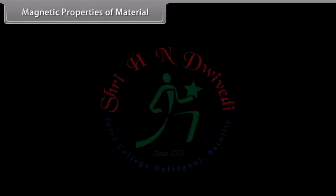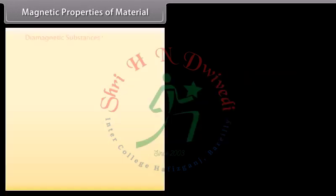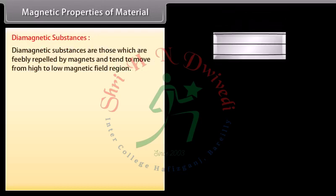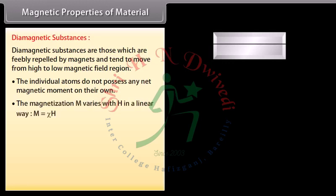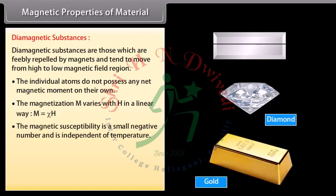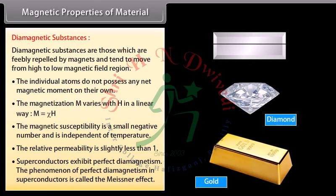Magnetic properties of materials: Materials are divided into three categories. Diamagnetic substances are feebly repelled by magnets and tend to move from high to low magnetic field regions. Their individual atoms do not possess any net magnetic moment. Magnetization M varies linearly with H; magnetic susceptibility is a small negative number, independent of temperature. Relative permeability is slightly less than 1. Superconductors exhibit perfect diamagnetism, a phenomenon called the Meissner effect.